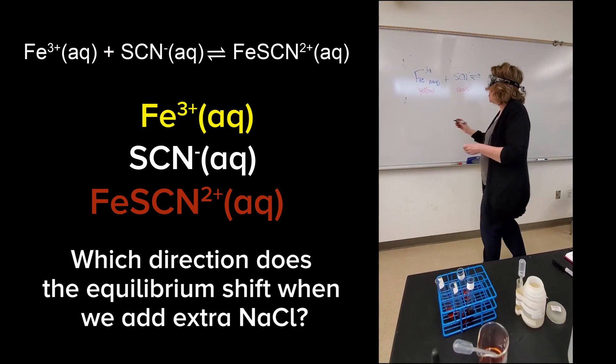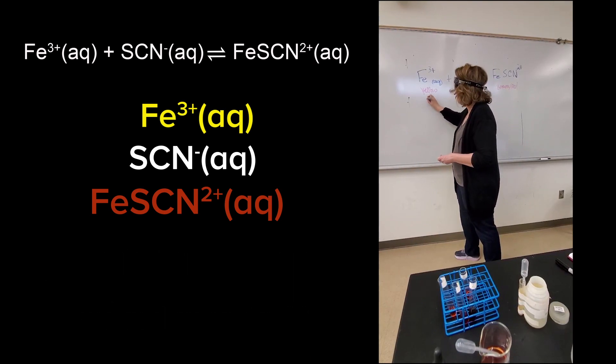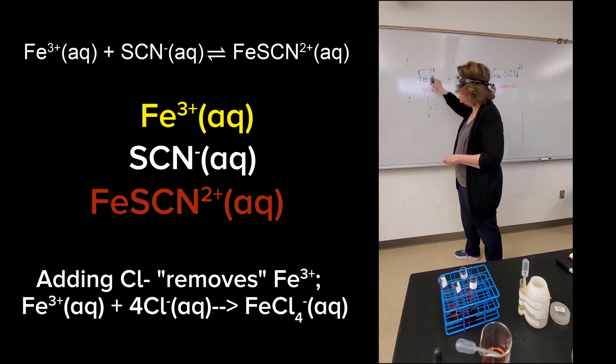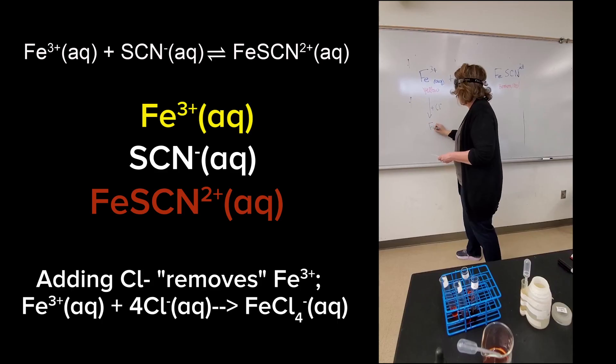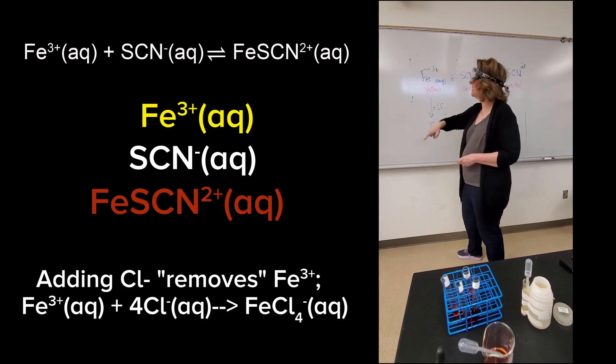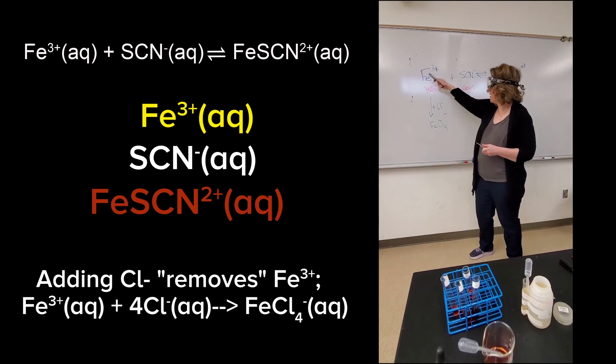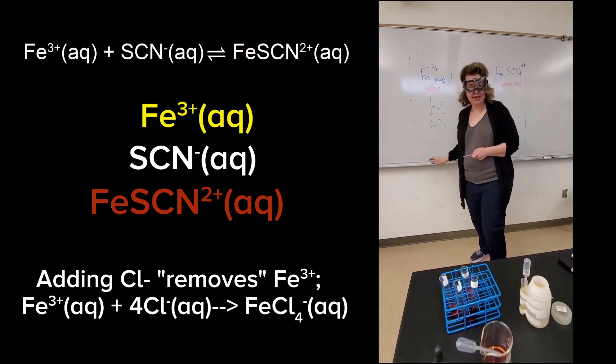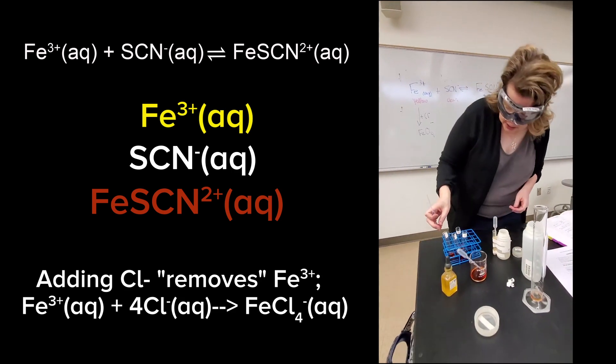So what the chloride does here is when I add the chloride ion, it effectively reacts with the iron to make a complex ion, and it removes the iron ion. So a removal, make a prediction, what's that going to do to the equilibrium?